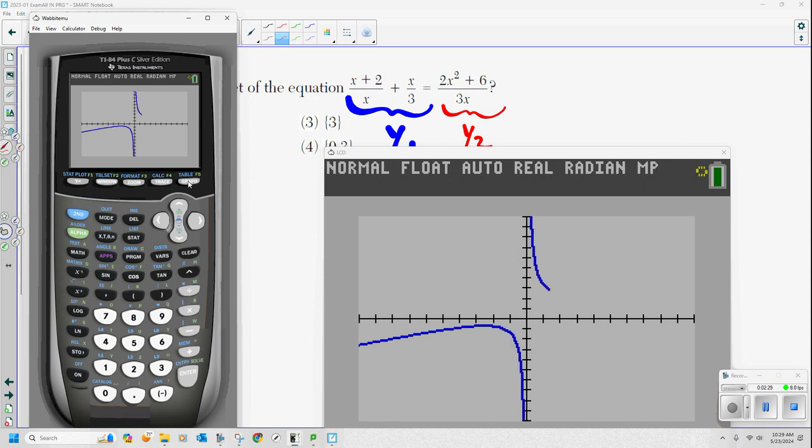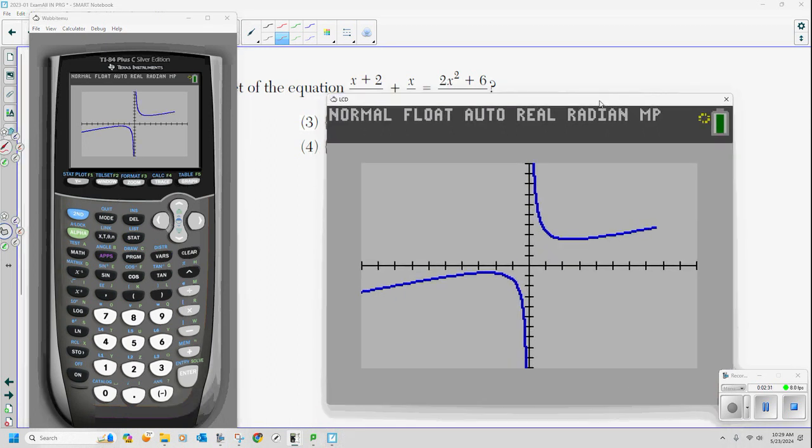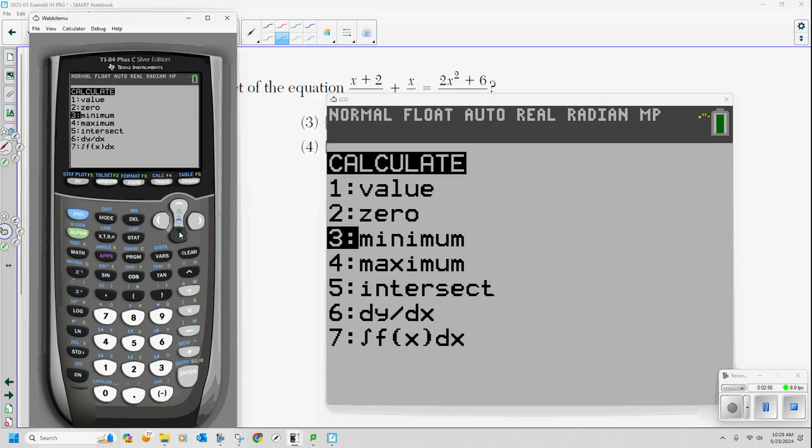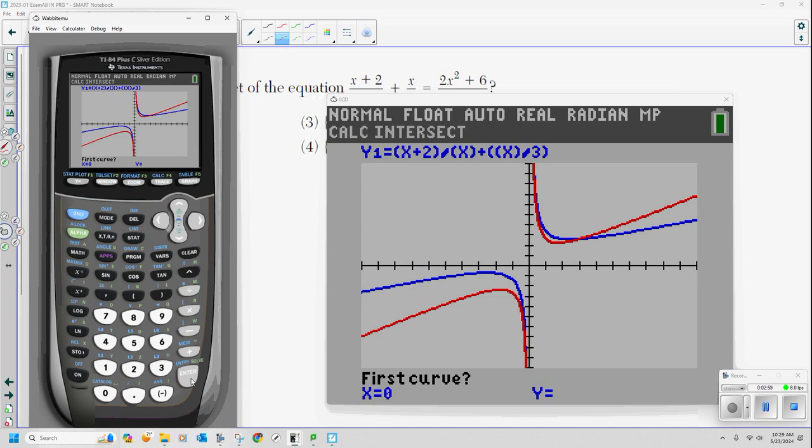And I'm going to put (x+2)/x. Make sure you're doing this correct. Plus x/3. The first time I did this problem, for the first fraction x+2 over x, I put a 2 on the bottom in the denominator instead of an x. And it came out wrong. I was trying to figure out what I did. And I just pressed the wrong button. The red function y2 is going to be the right side. Again, we'll need a fraction. 2x²+6 over 3x.